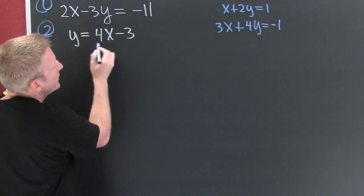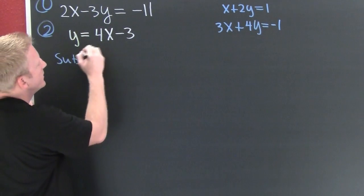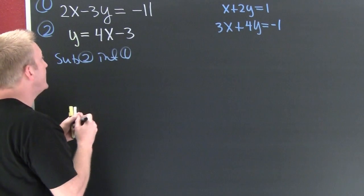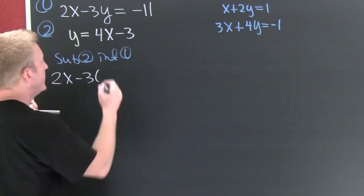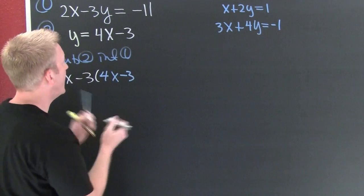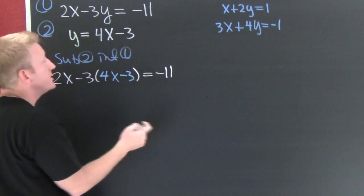Since y is this, everywhere in one we see a y we can put this guy. So we're gonna sub two into one. And then when we do that we're gonna see we have 2x minus 3 times, wait for it, 4x minus 3.